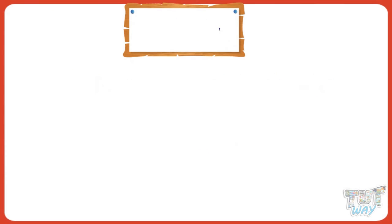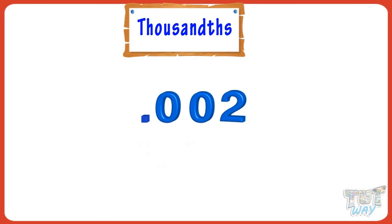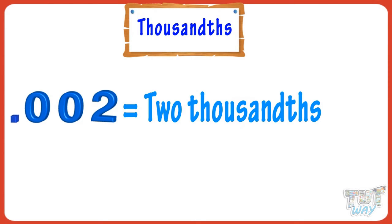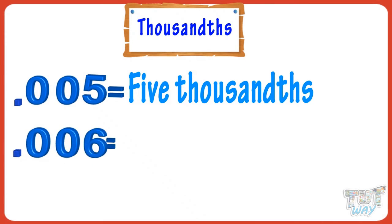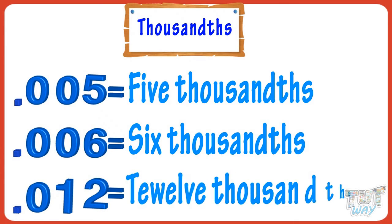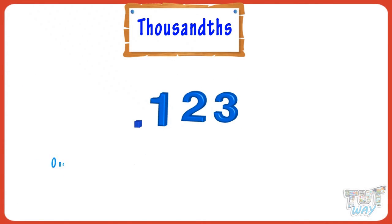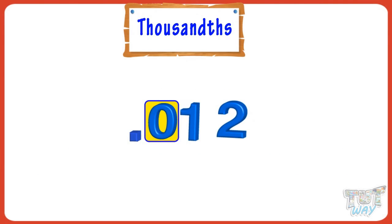Now let's learn about the thousandths place. Thousandths place means there are three digits after the decimal point. Point zero zero two is named as two thousandths. Let's have a look at a few examples: point zero zero five is five thousandths, point zero zero six is six thousandths, point zero one two is twelve thousandths, point one two three is one hundred twenty-three thousandths. So kids, whenever there are three digits after the decimal point, you name them as thousandths. And remember, zeros hold places where the digits are less than three.